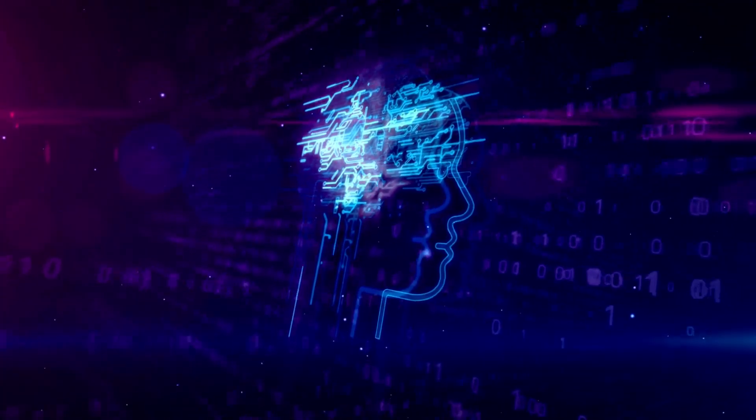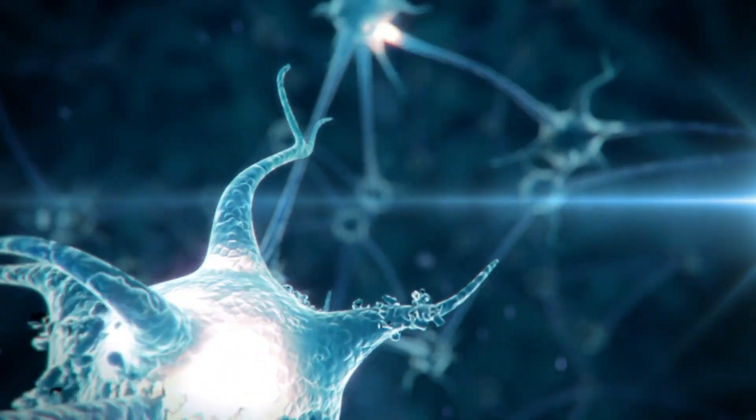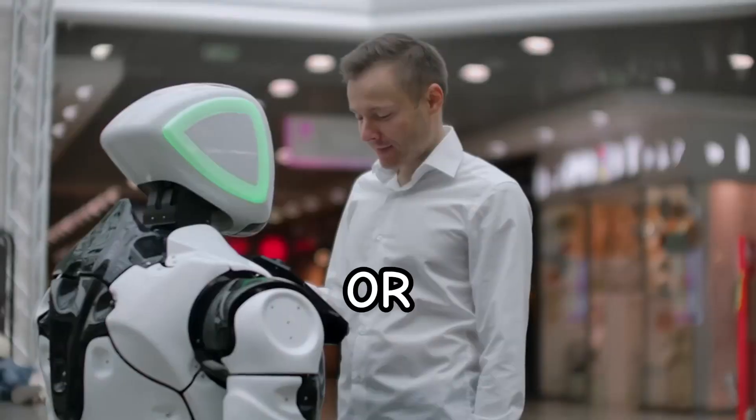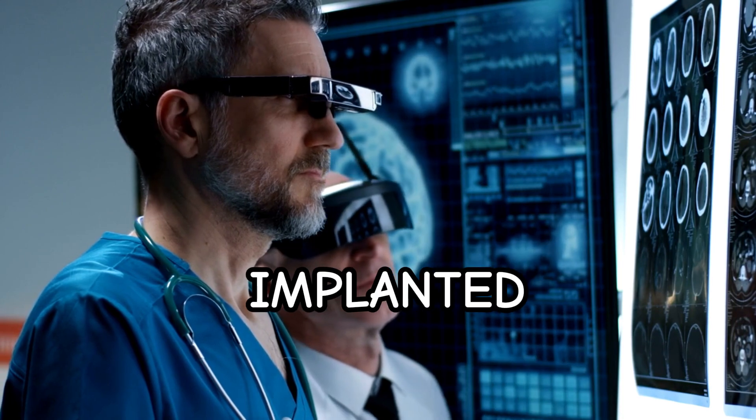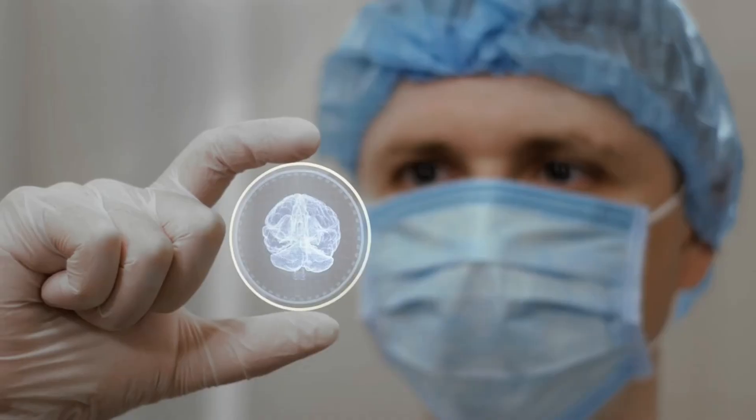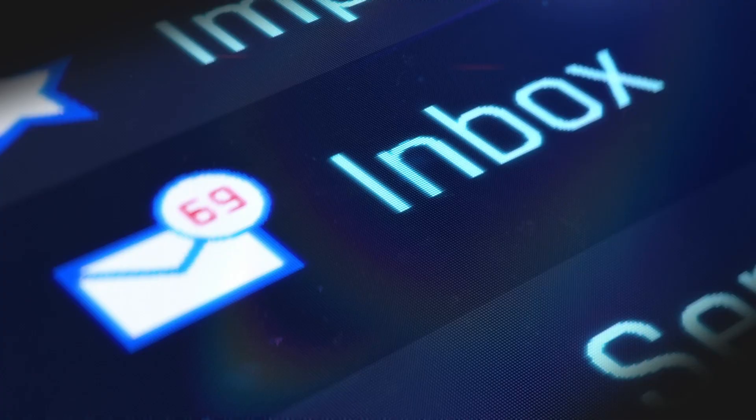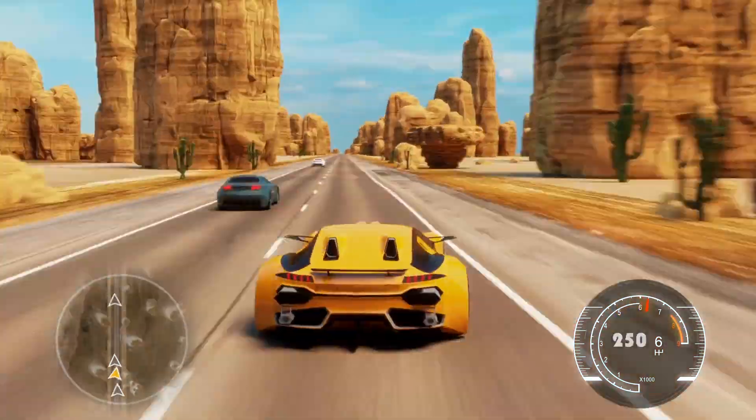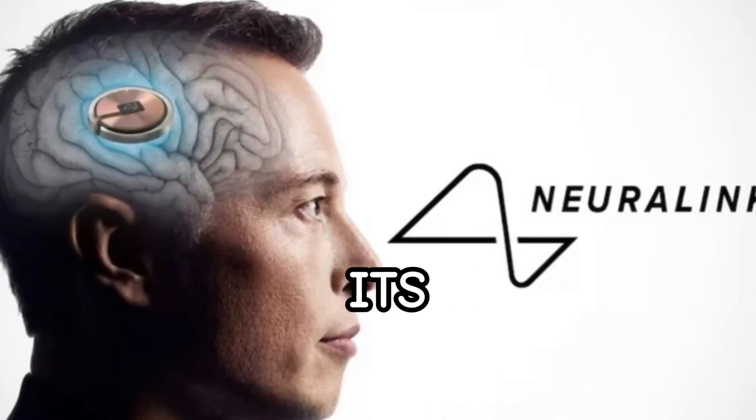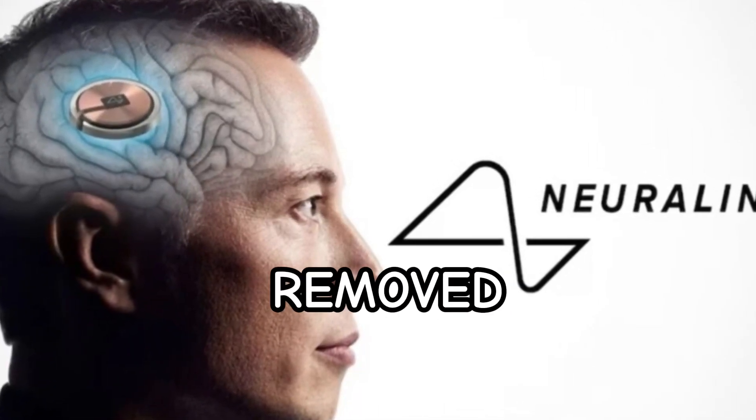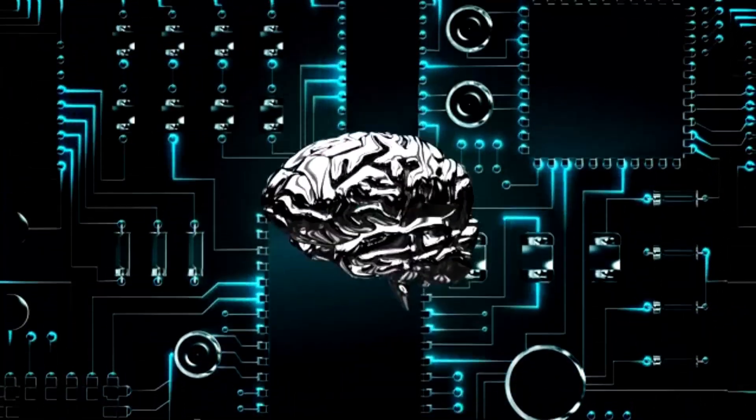Neuralink claims that the link can enable a variety of functions, such as restoring vision, hearing, or movement, enhancing memory, learning, or creativity, or even merging with artificial intelligence. Neuralink also claims that the link can be implanted in humans with a simple and painless procedure performed by a robotic surgeon in less than an hour without general anesthesia, and that it can be used to control computer cursors, video games, or prosthetic limbs just by thinking. The company has also shown that its device can be implanted and removed safely, and that it can last for months or years without causing infections, inflammation, or rejection.